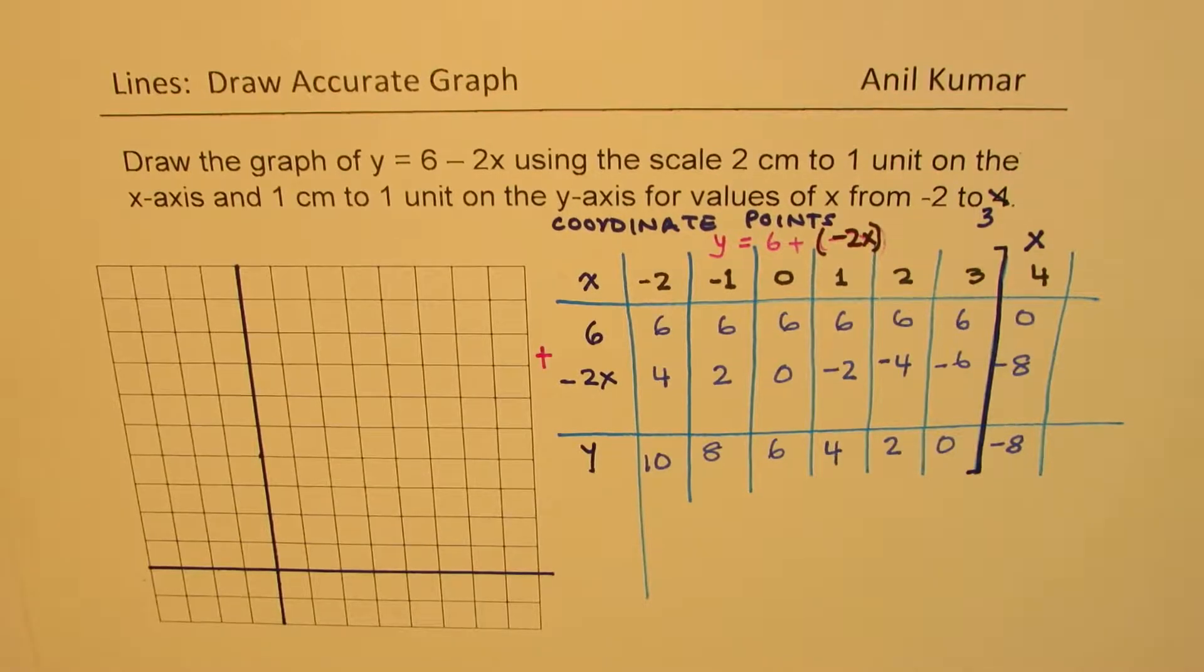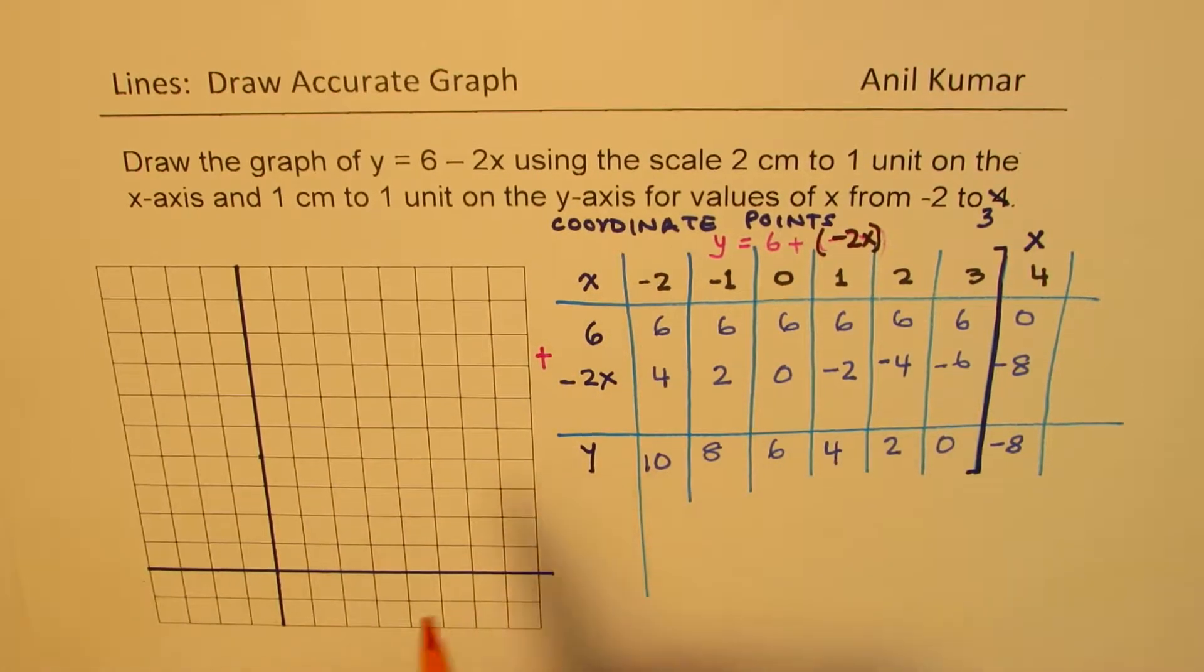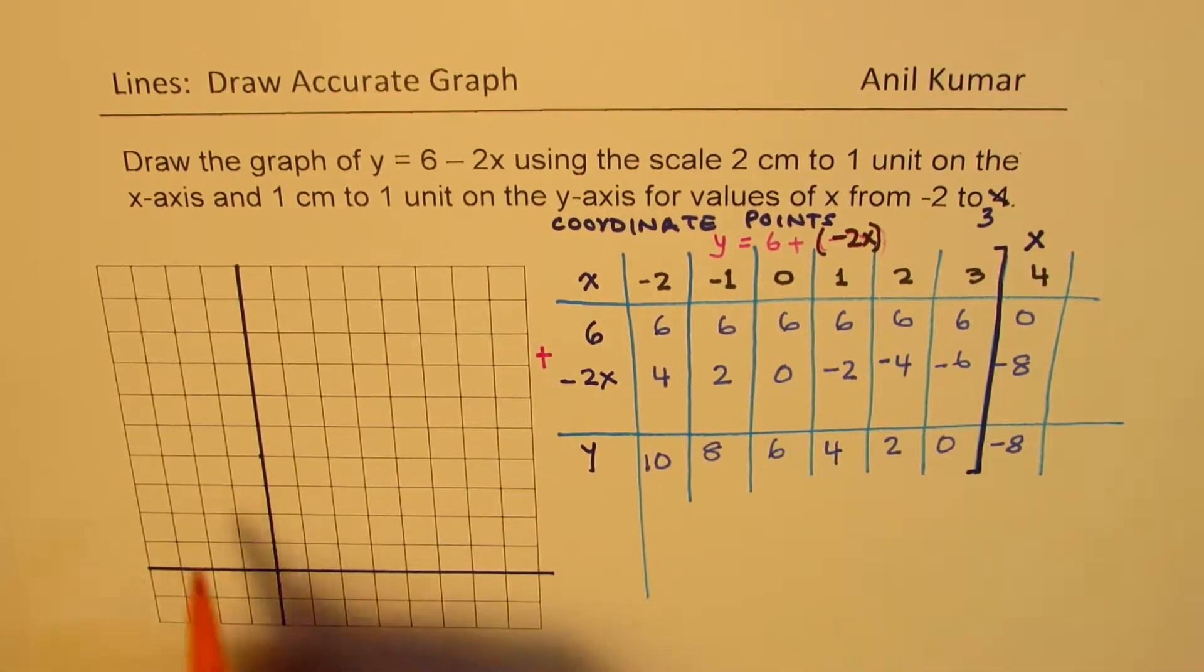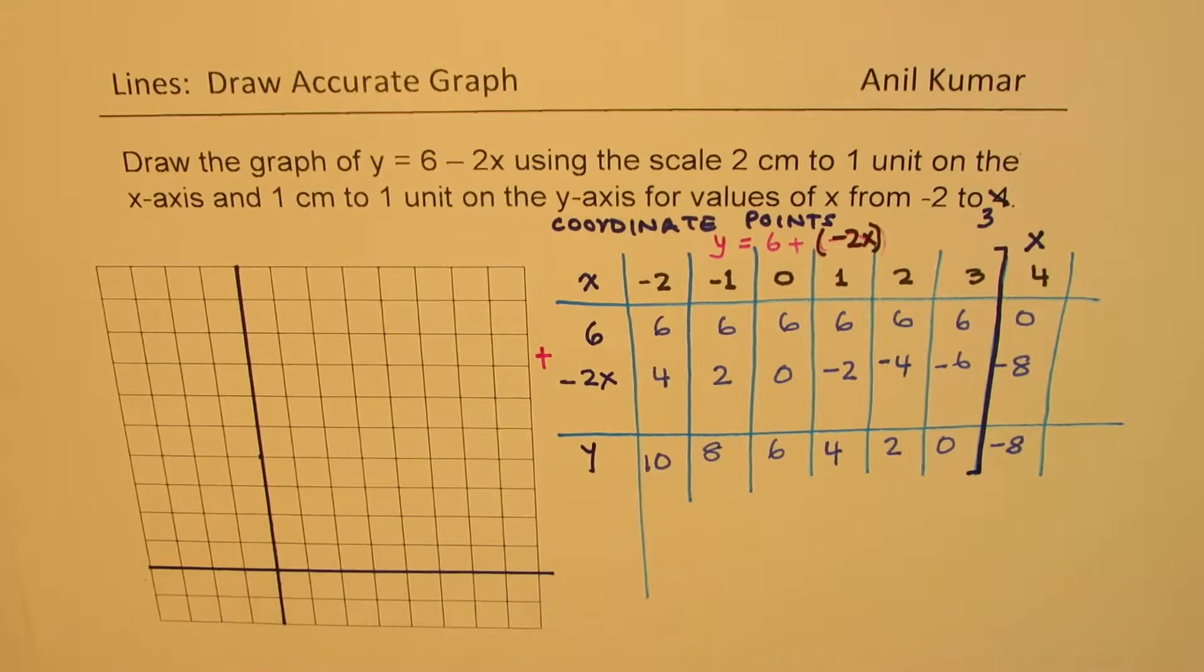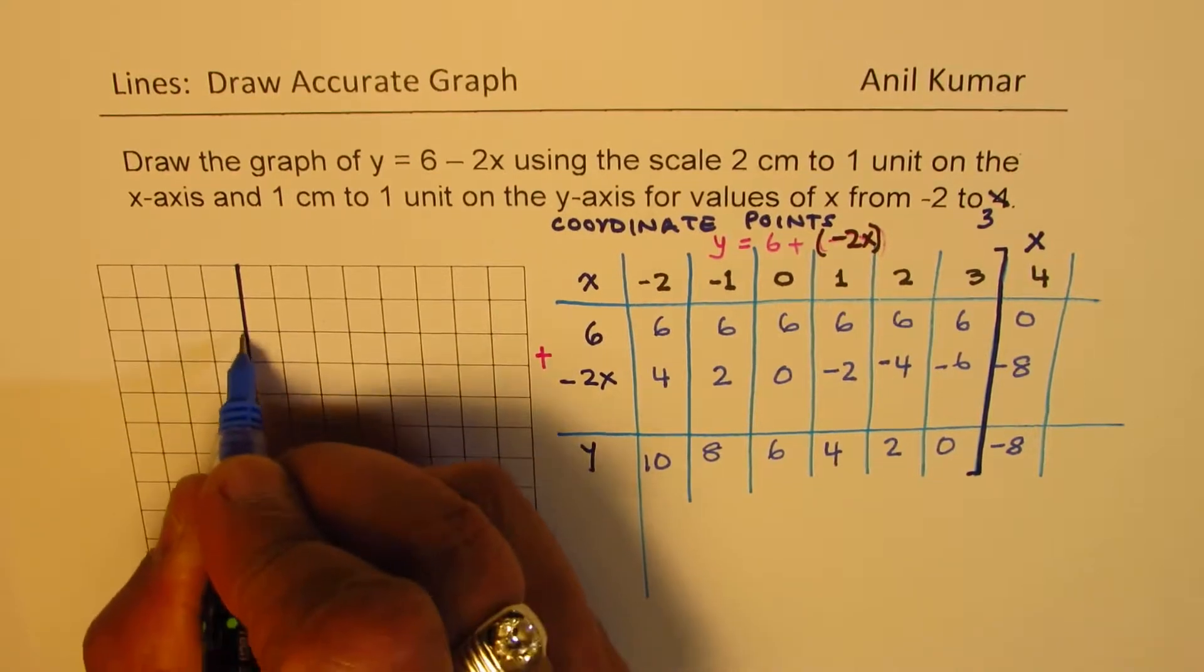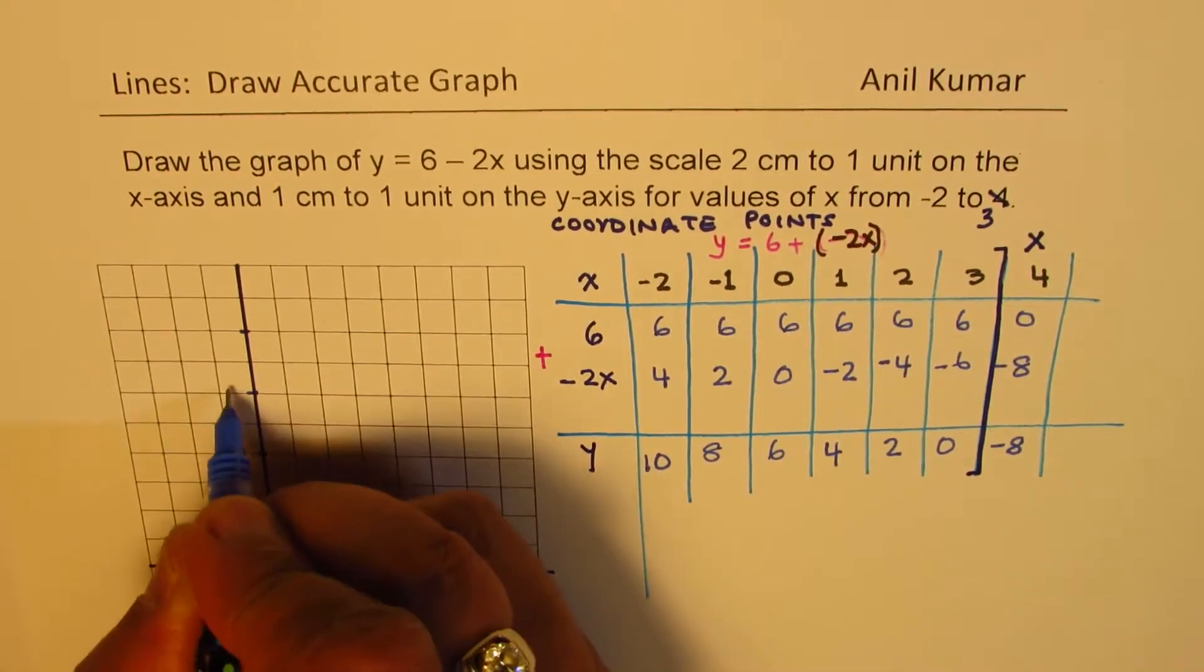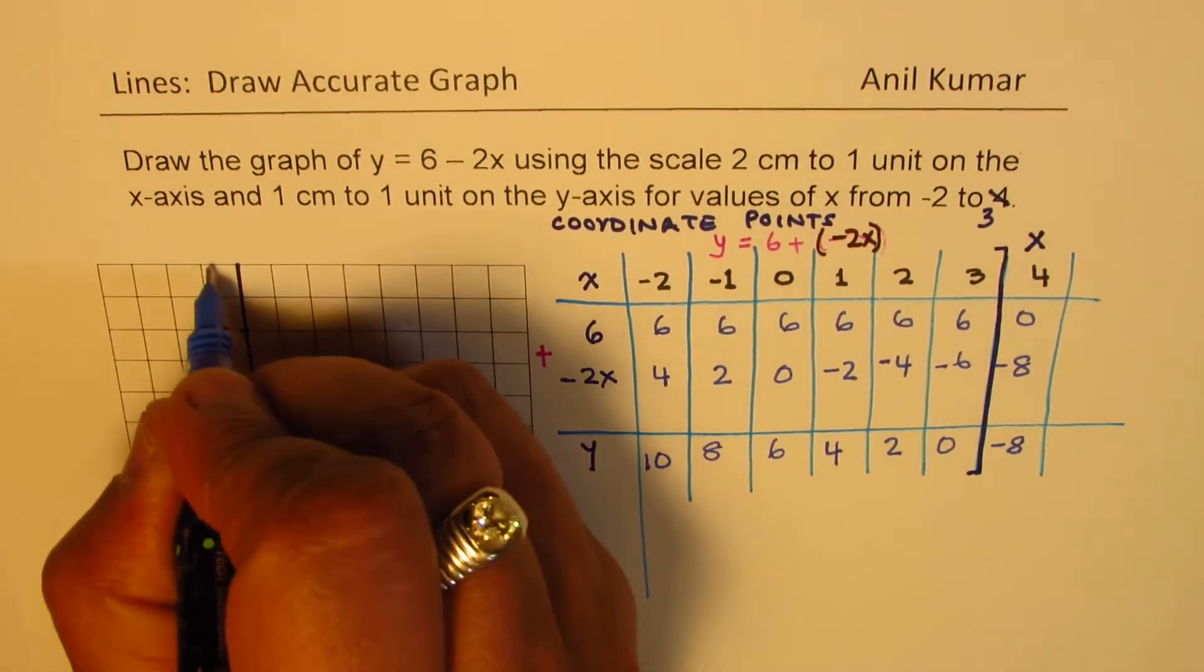Now let's plot the points one by one. So the first point is that x equals to minus 2. We have 10. So let's write down. That is 2, 4, 6, 8, and 10.